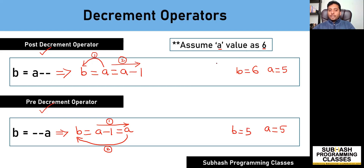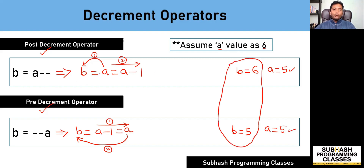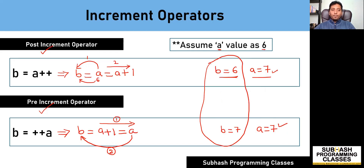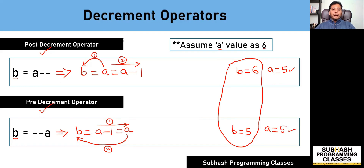As you can see, in either case the value of a remains 5. The only difference comes into picture when you actually assign the value of those operations into another variable b. Hope you understood the difference between the post increment and pre increment, as well as post decrement and pre decrement operators.